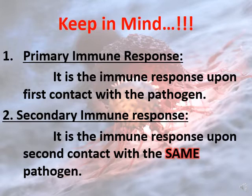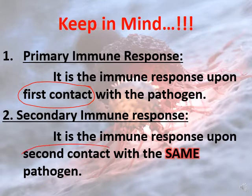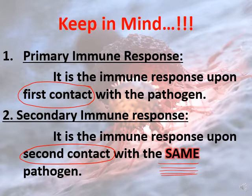The primary immune response is the immune response upon the first contact with the pathogen — whether it's bacteria, a virus, parasites, or whatever. The secondary immune response is the immune response upon the second contact with the same antigen or the same pathogen.